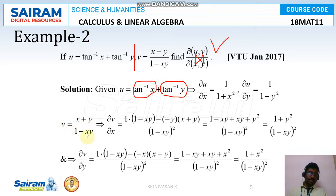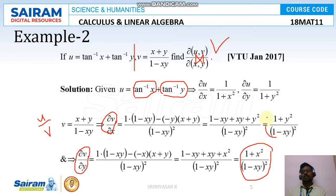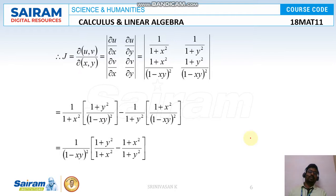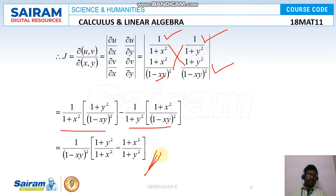For v = (x + y)/(1 − xy), applying the quotient rule gives ∂v/∂x = (1 + y²)/(1 − xy)² and ∂v/∂y = (1 + x²)/(1 − xy)². Substituting into the matrix and performing cross multiplication, in both terms (1 − xy)² is a common factor. Taking it outside and simplifying gives the Jacobian. You may simplify further or leave it in this form.